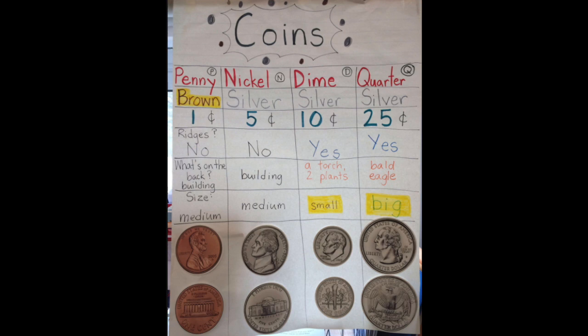Next, we have a dime. A dime is silver, worth ten cents, and it is rough on the outside — it does have ridges. On the back is a torch and two plants, and even though it is worth more than a penny and a nickel, it is smaller than both. Lastly, we have our quarter, which is silver as well. It is worth 25 cents, which is the most. Just like a dime, it does have ridges on the outside. On the back it has a bald eagle, and it is the biggest of the coins.